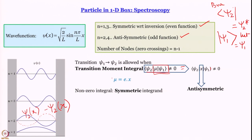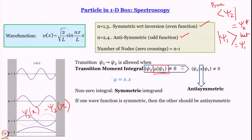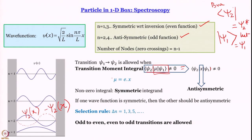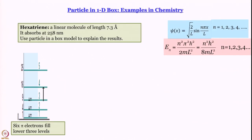Since x is anti-symmetric, for the triple product ψ₂ · x · ψ₁ to be symmetric (and the integral non-zero), one wave function must be symmetric and the other anti-symmetric. That means the selection rule is Δn = 1, 3, 5, ... (odd values only). From n=1 (symmetric) one can go to n=2 (anti-symmetric) — allowed. But one cannot go to n=3 (also symmetric) because symmetric × anti-symmetric × symmetric is anti-symmetric, making the integral vanish.